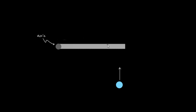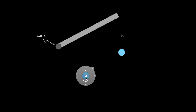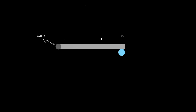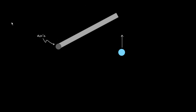Imagine you have this bar here. This is a bird's eye view — we're looking down at a tabletop. This bar is attached to an axis that can rotate. Imagine we throw this ball, moving in a straight line, and it hits the edge of this bar. The bar is going to rotate about its axis. This bar initially had no angular momentum because it was just sitting at rest.